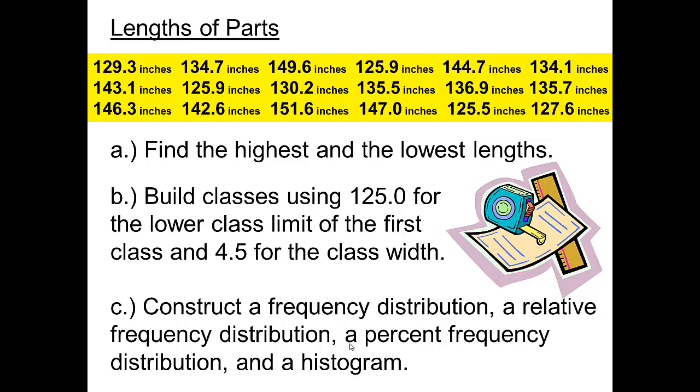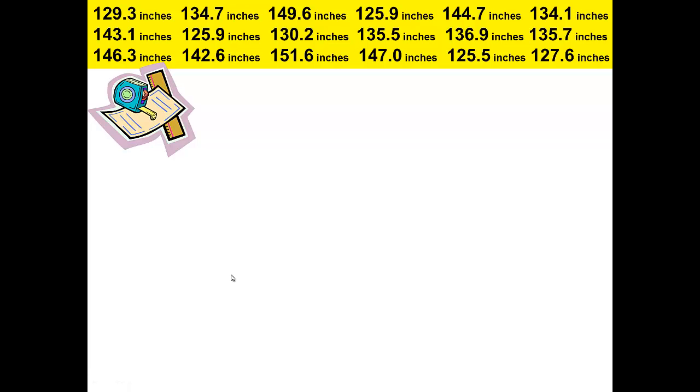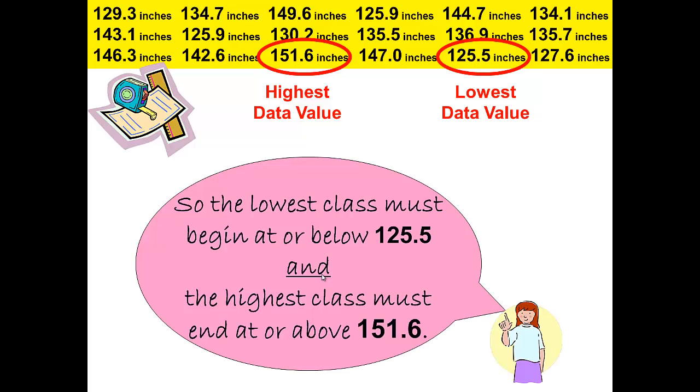First we need to find the highest and lowest lengths of parts from our data. We have a list of data that includes lengths of parts and we need to find the lowest and highest data values when creating our classes. The lowest value in our data is 125.5 and the highest data value is 151.6 inches. When creating our classes, the lowest class must begin at or below 125.5 and the highest class must end at or above 151.6.